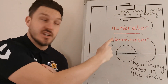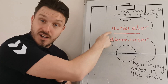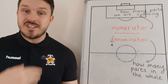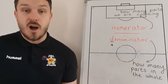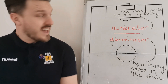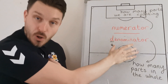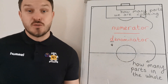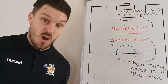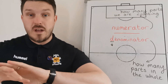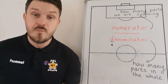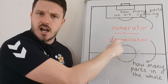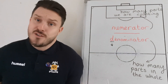The top section is called the numerator, which is from the Latin word 'numerus', which is how many parts we are counting. And then if we look at the bottom part, it's called the denominator, which is from the Latin word 'denomino', which means what we are counting as a whole. I like to remember D for denominator, D for down, so that I don't get confused.